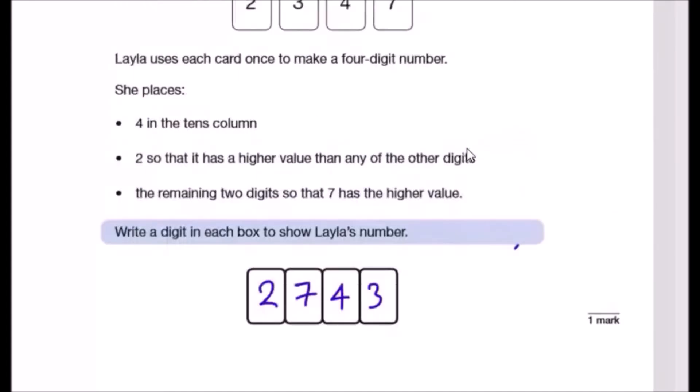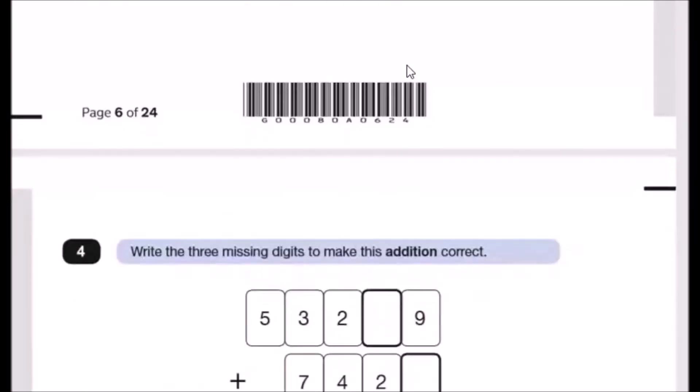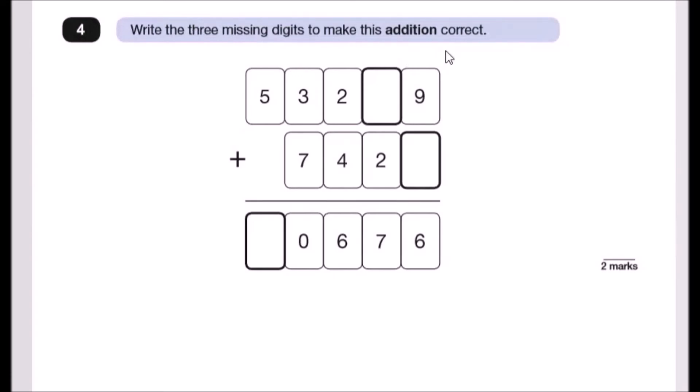Number four: Write the three missing digits to make this addition correct. We always start from the right side, from the units, then move across. Nine plus something gives us 6, so 9 plus 7 equals 16, carry the one. One plus something plus 2 gives us 7. One plus 2 is 3, add 4 more to get 7. Two add 4 is 6, that checks out. Three plus 7 is 10, so zero and carry the one. One plus 5 gives us 6. That's our final answer.